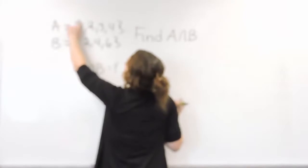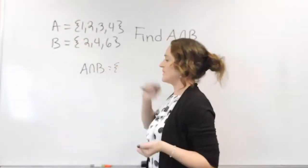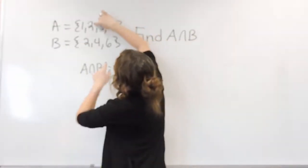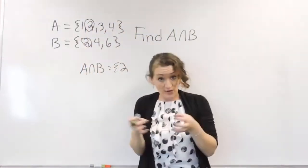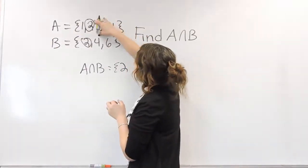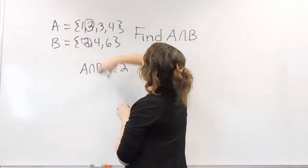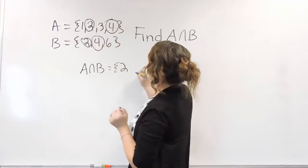I have a one here, but I don't have it there, so it can't be in my intersection. I have a two here and I also have a two there, so I do share a two in common. There's a three in set A but not in set B. There's a four that I have in common.